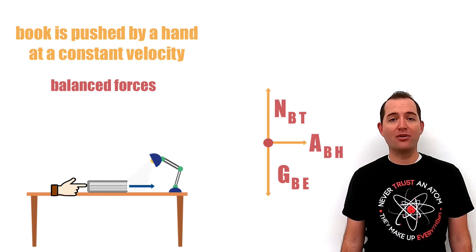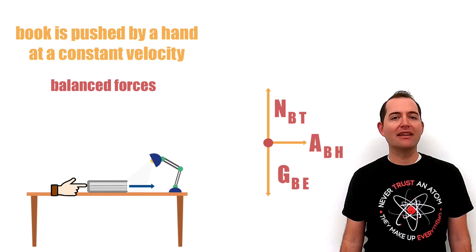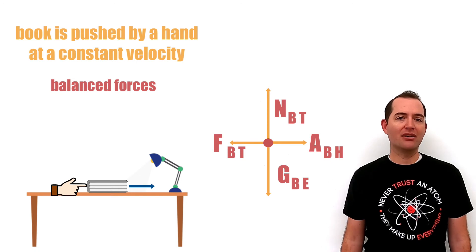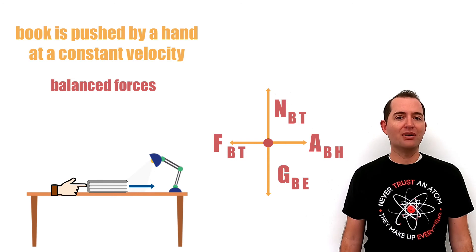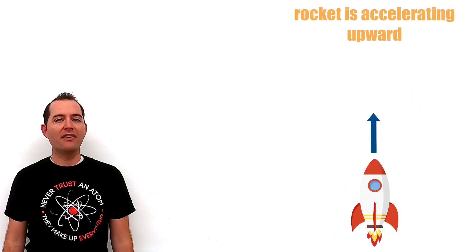We have an applied force on the book by the hand, and this is balanced by the friction force on the book by the table. Again, these forces are also balanced, so the book is not accelerating. In our final example,